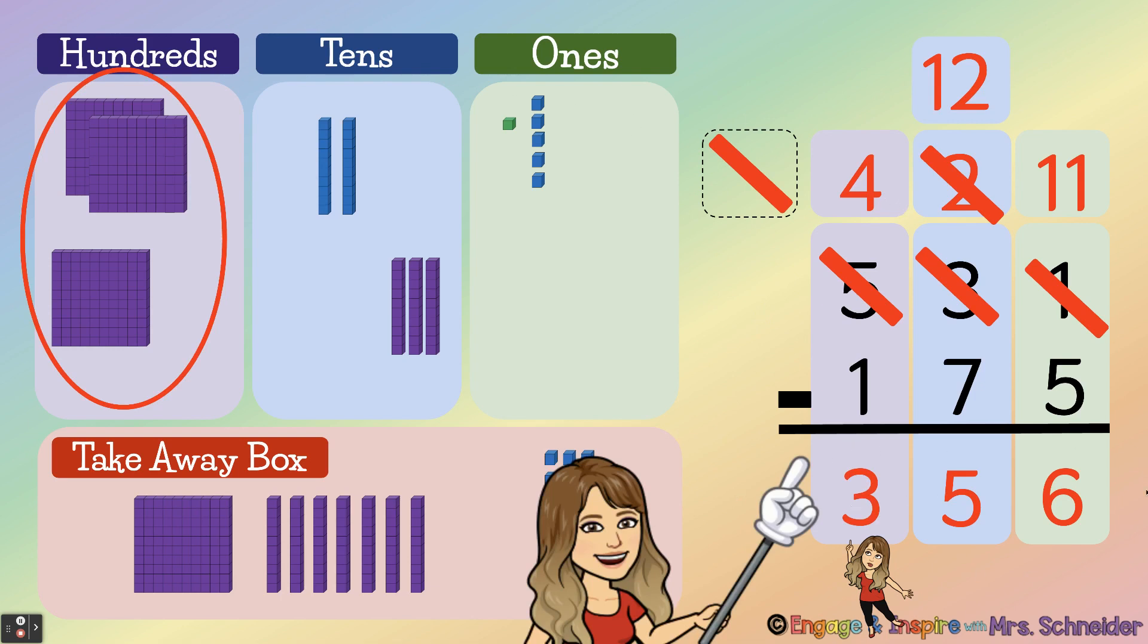So the answer to this problem is 356. Mrs. Schneider still had 356 cookies left over. I hope that helped explain how you regroup from hundreds to tens and tens to ones. You guys have a great day.